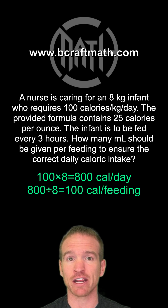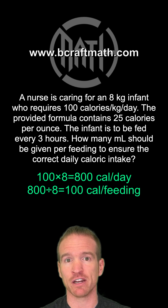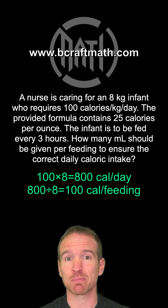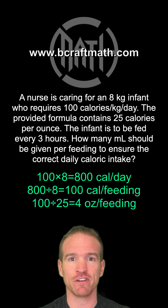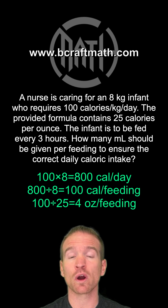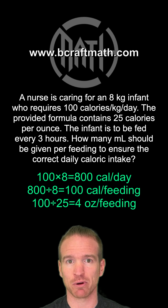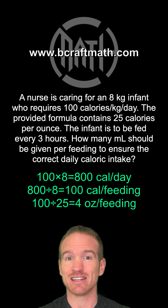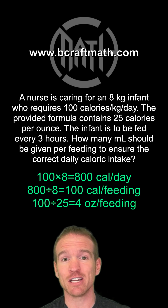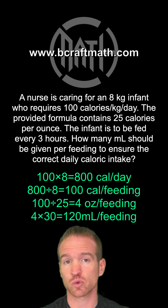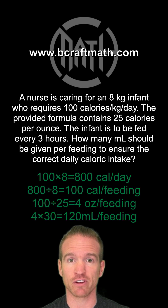We have the per feeding, but we don't want calories per feeding — we need milliliters per feeding. With 100 calories per feeding, and the problem stating 25 calories per ounce, we take the 100 calories per feeding and divide by 25, giving us four ounces per feeding. We don't want ounces per feeding, we want milliliters per feeding. Since 30 milliliters is one ounce and the infant needs four ounces per feeding, 30 times four is 120 — this represents 120 milliliters per feeding.